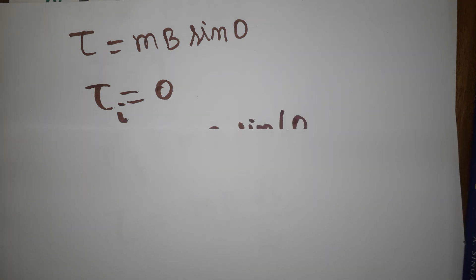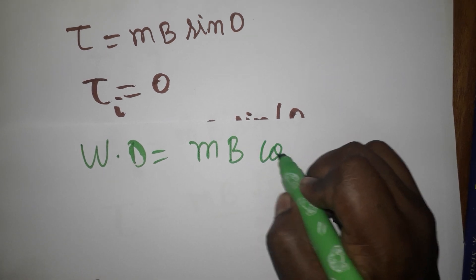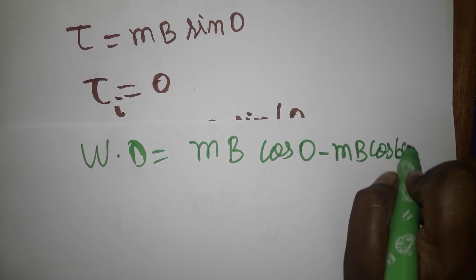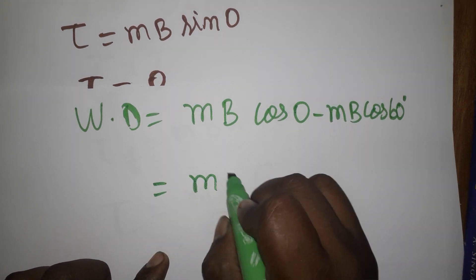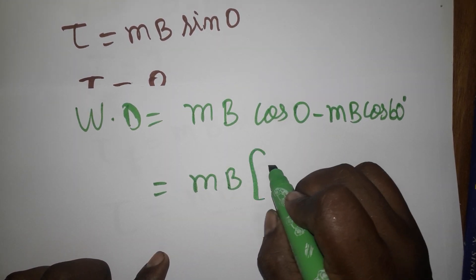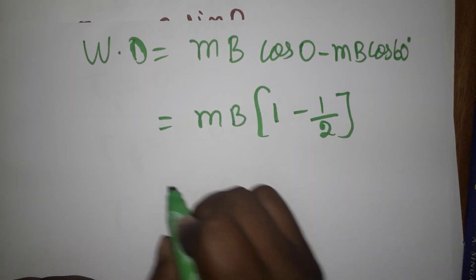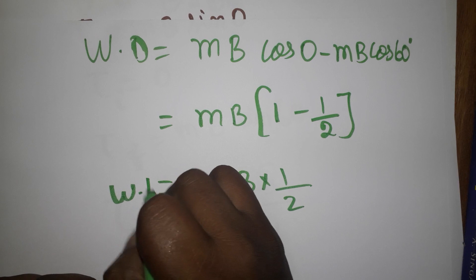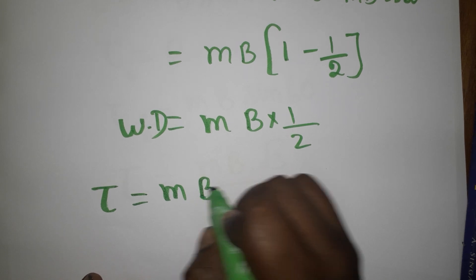Now we'll find the work done. Work done equals MB cos θ. We calculate it as MB cos 0° minus MB cos 60°. cos 0° is 1 and cos 60° is 1/2, so work done equals MB times (1 − 1/2), which gives MB/2.